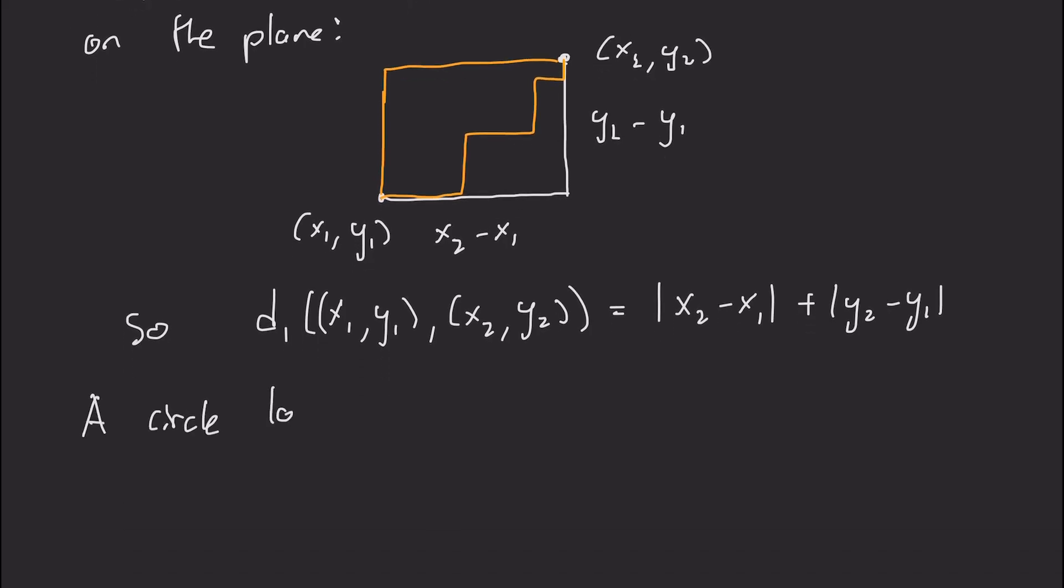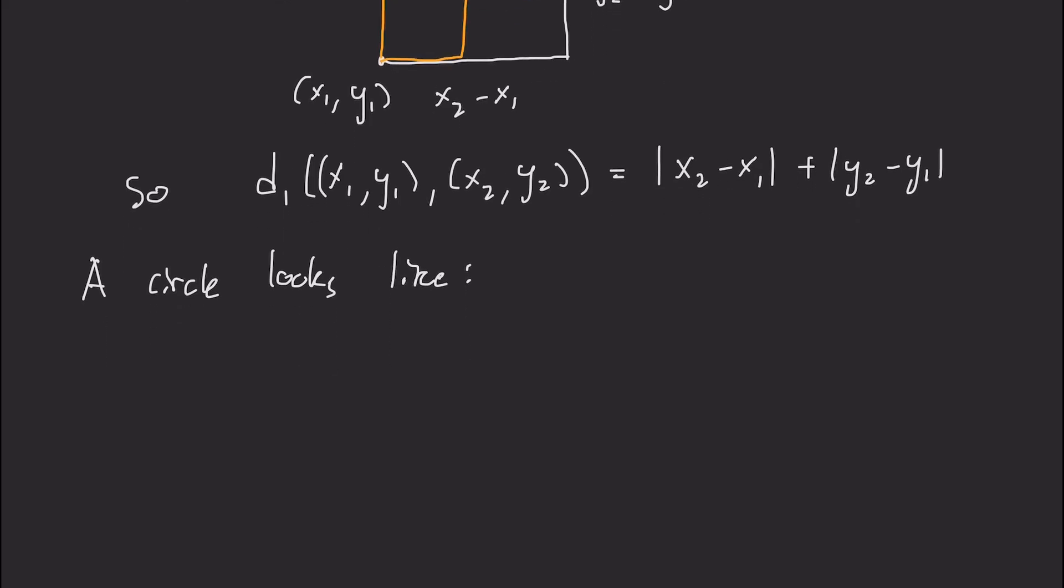Okay, so what does a circle look like with this distance? Well again, it's all the points that are equidistant from 0, 0. And in this case, we get the absolute value of x plus the absolute value of y equals r, which is this diamond shape. And I encourage you to check this for yourself, for example, on a graphing calculator.